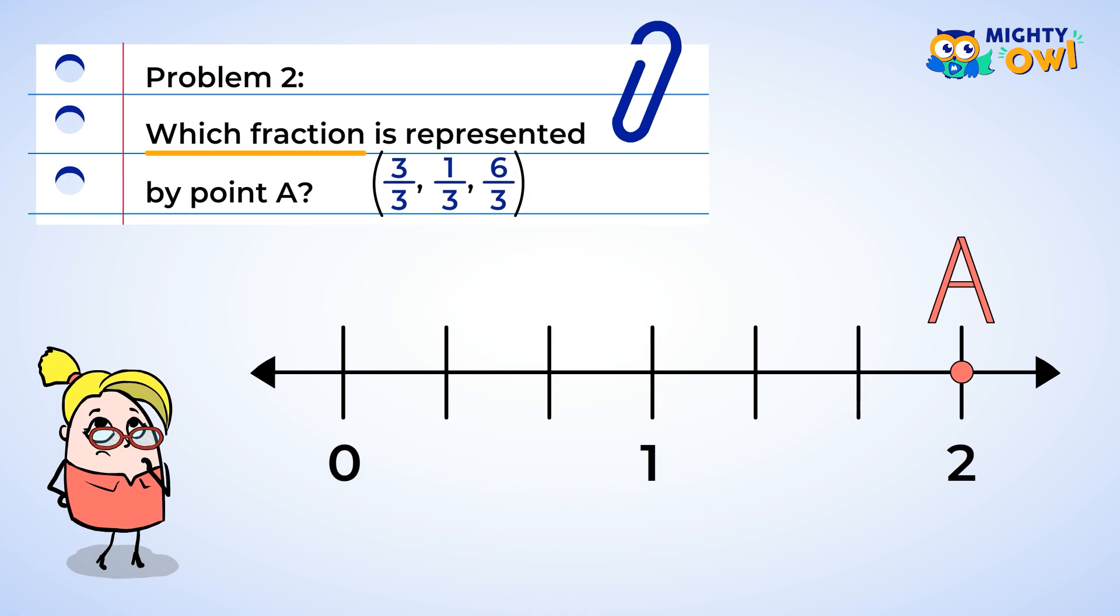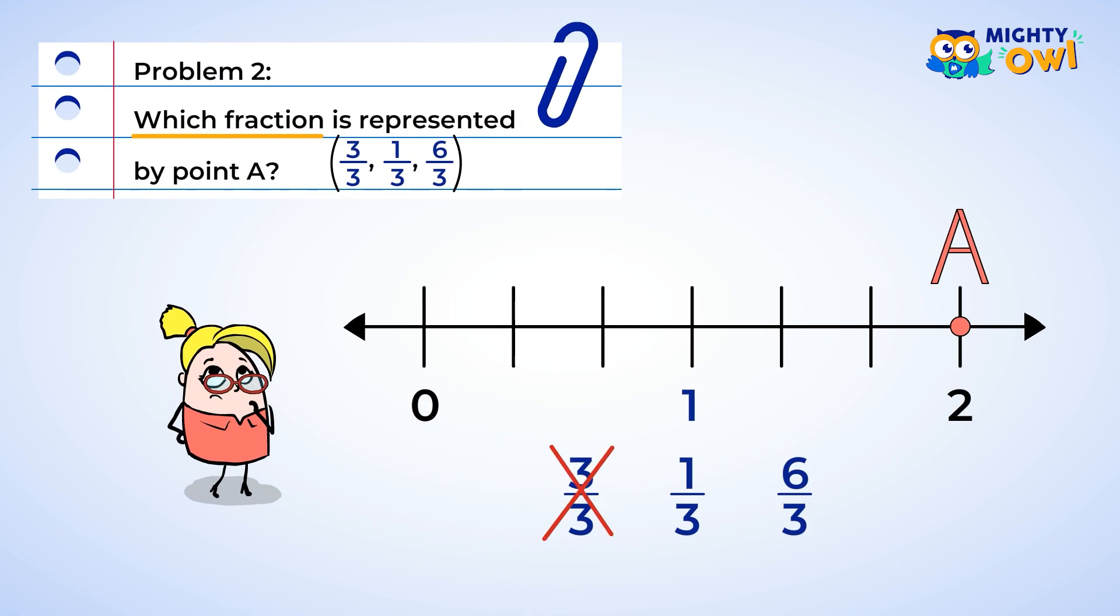Since it is to the right of one, it must be more than one. Well, looking at our options, we can cross off three-thirds. The numerator and denominator there are the same, so that's just equal to one.